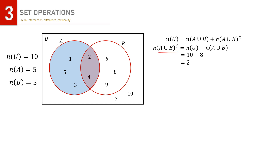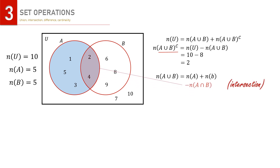Another important set is A∪B. From the Venn diagram, the cardinality formula is: n(A∪B) = n(A) + n(B) − n(A∩B). Given that n(A) = 5, n(B) = 5, and n(A∩B) = 2, we get n(A∪B) = 8. Depending on available information, this formula helps us find each specific cardinality.